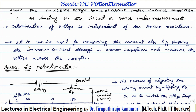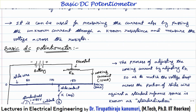It can also be used for measuring current. Because it is a voltage measuring device, what we do is pass the unknown current through some known standard resistance and measure the voltage drop across the resistance. Then that voltage drop divided by the value of the standard resistance will give the current — that is how we can measure it.